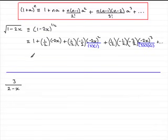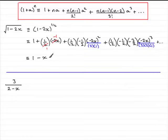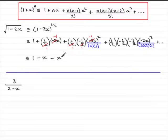Now let's tidy this up. The first term is just 1. In the second term, the two 2's cancel, leaving minus 1 times x, so minus x. For the third term, we do more cancelling — that 2 and the repeated factor of minus 2 cancel, giving minus 1 times x all squared, which is plus x squared, but the minus 1 on top makes it minus x squared over 2.